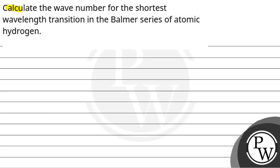Hello, let's read the question. Calculate the wave number for the shortest wavelength transition in the Balmer series of atomic hydrogen.